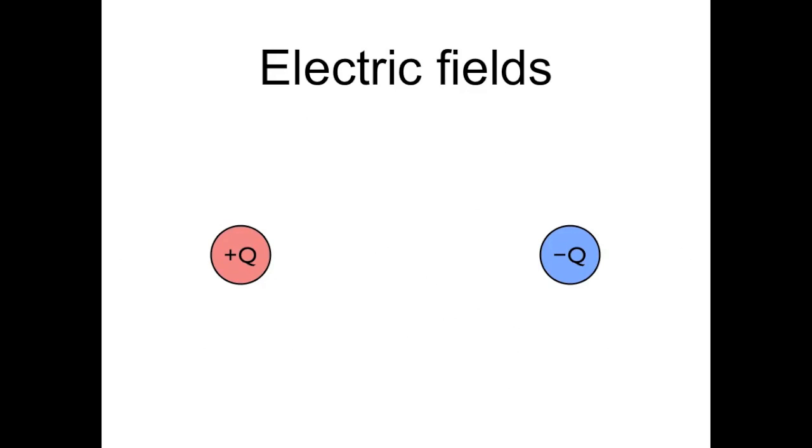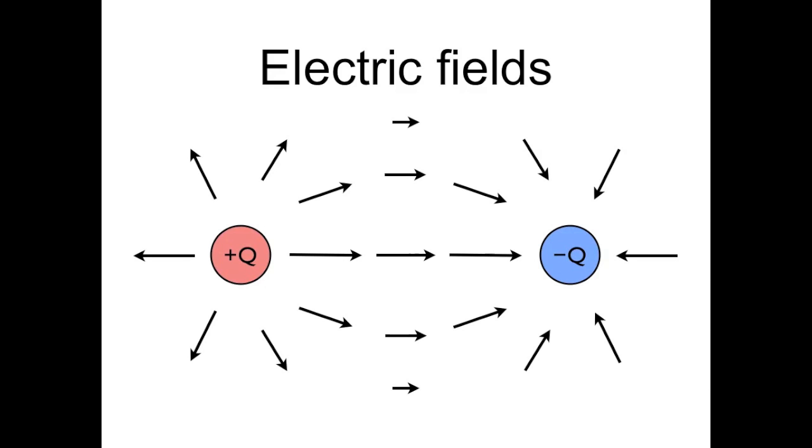And here's an illustration of the electric field for a positive and negative charge that are near each other. In this case, where the charges are equal in magnitude but opposite in sign, the electric field is purely horizontal along the midline between the charges.